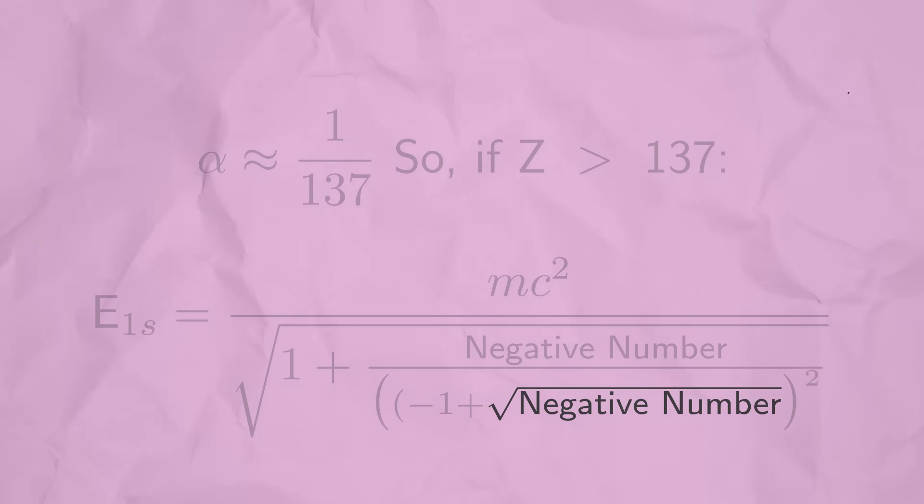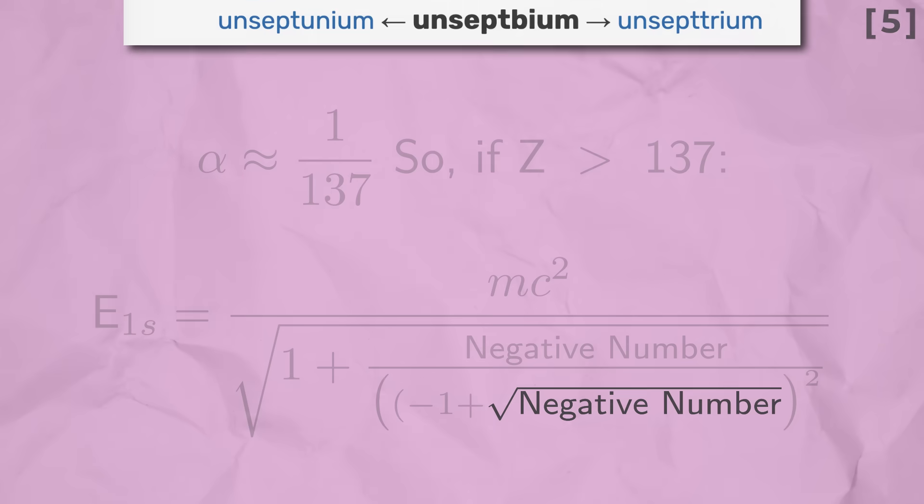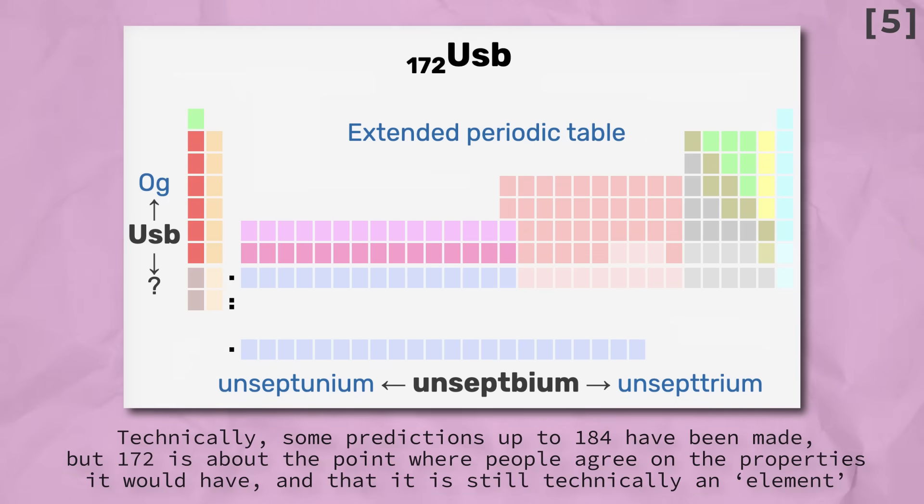This is definitely breaking the rules a bit, and is often a handy tool physicists use to prove the non-existence of something. But this also turned out to be a little bit of an oversimplification, with modern calculations presenting the possibility of elements all the way up to an atomic number of 172.